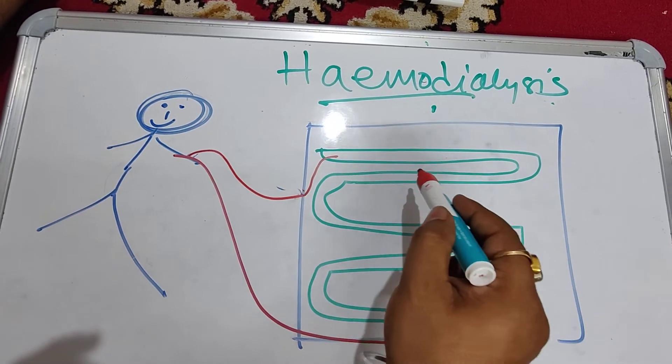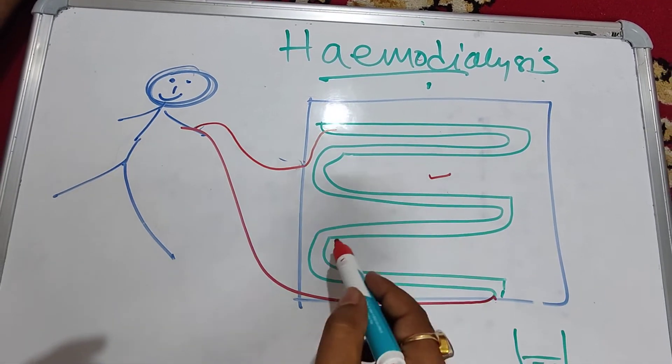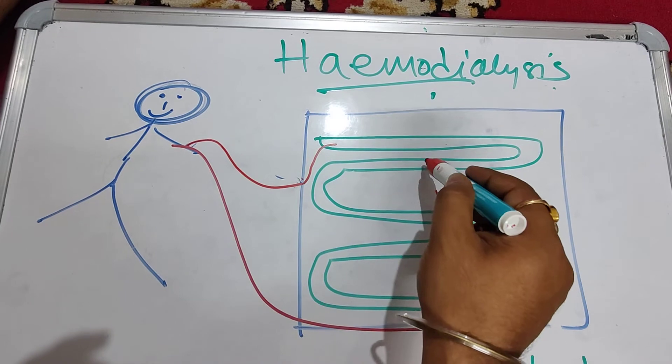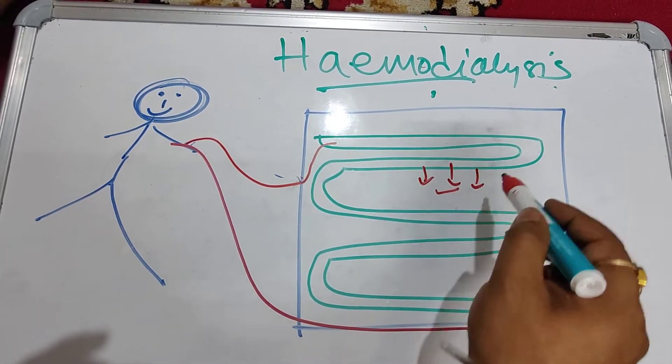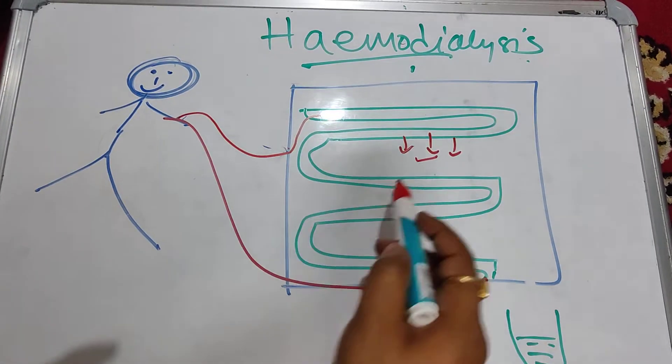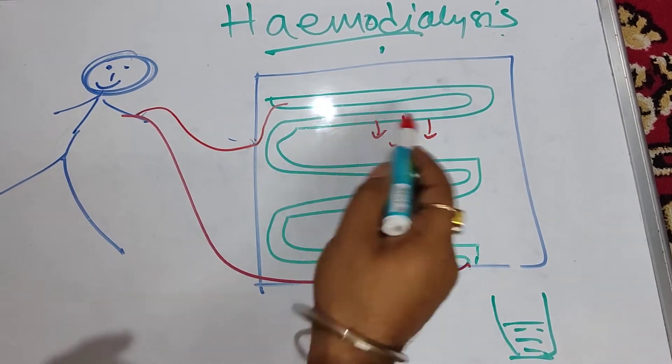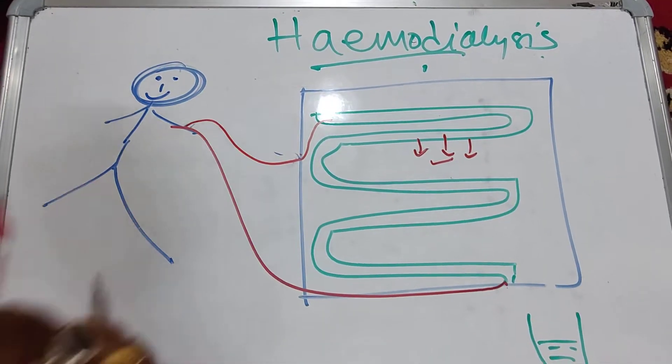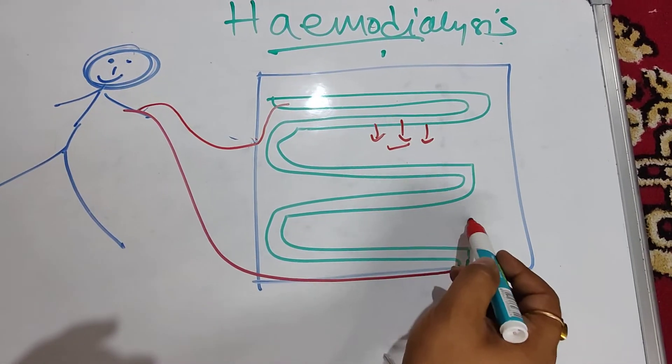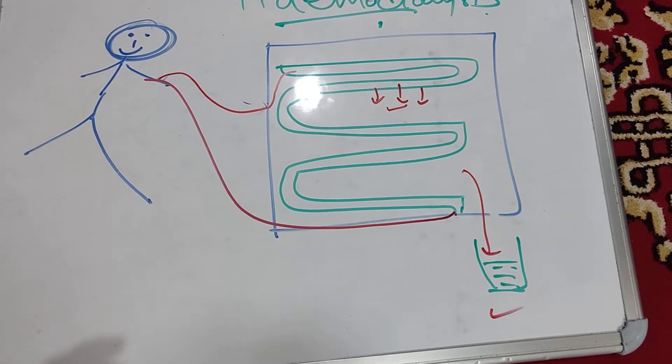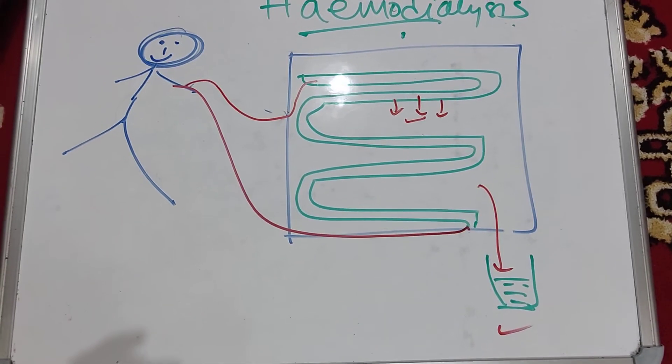When blood transfers through the chamber, waste products diffuse into the solution, the blood gets cleaned, and waste products are collected. Now tell me, what doesn't happen here that happens in the kidney?